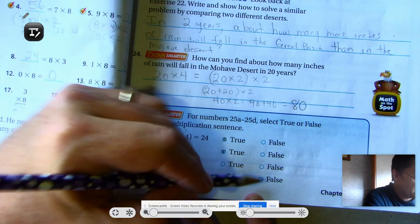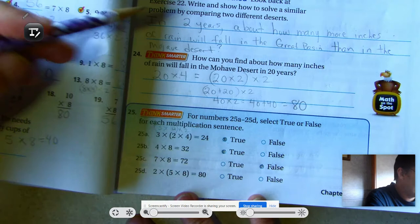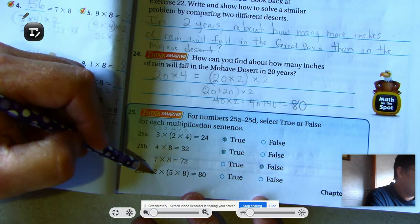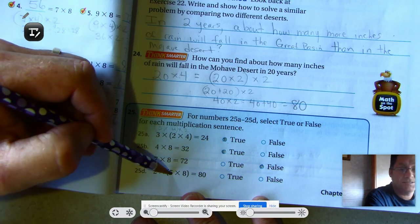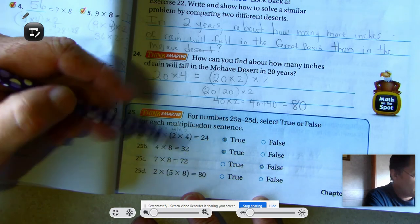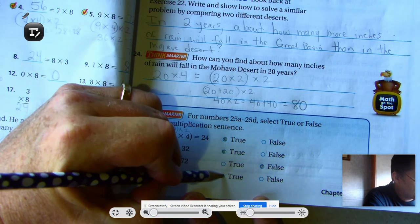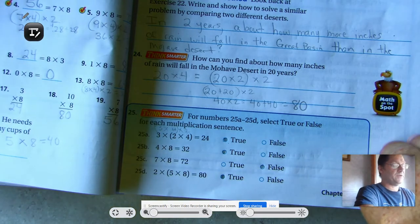7 times 8 is 72. No, that's false. 7 times 8 is 56. 2 times 5 times 8 is 80. 5 times 8 is 40. 40 plus 40 is 80. So yes, that's true. Okay, page 172.